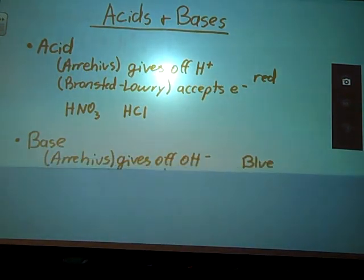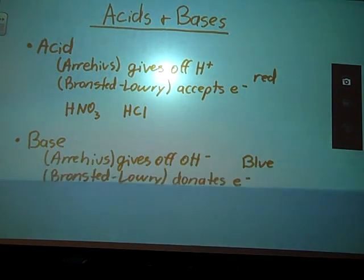A base, on the other hand, according to Arrhenius, gives off a hydroxide, OH-. So, these would be things like sodium hydroxide, potassium hydroxide, but you have some substances like ammonia, NH3. Well, it has no hydroxide to give off, so now we really need that Bronsted-Lowry definition that talks about donating electrons to be shared.